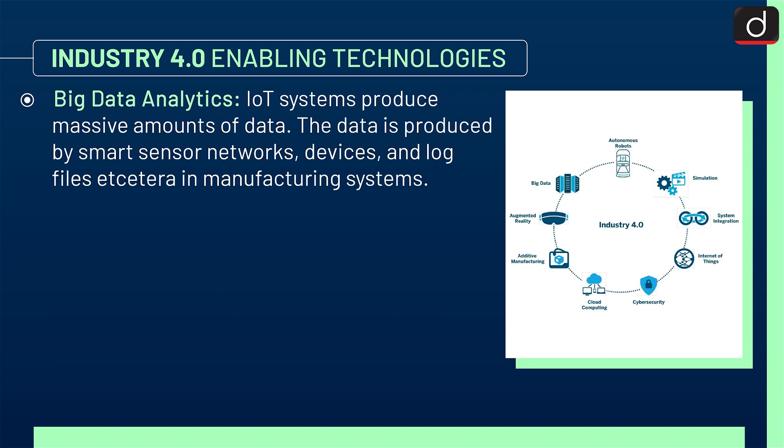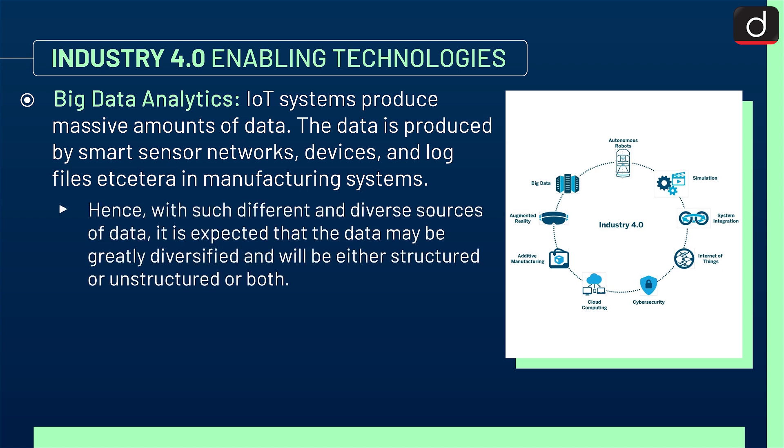Next is Big Data Analytics. IoT systems produce massive amounts of data, produced by smart sensor networks, devices, and log files in manufacturing systems. With such different and diverse sources of data, it is expected that the data may be greatly diversified and will be either structured, unstructured, or both.